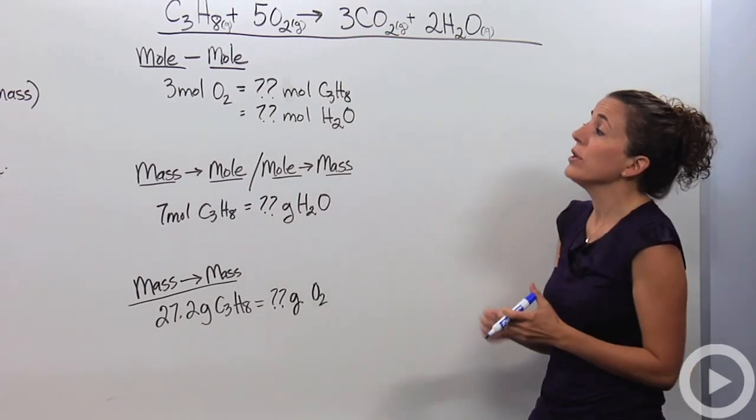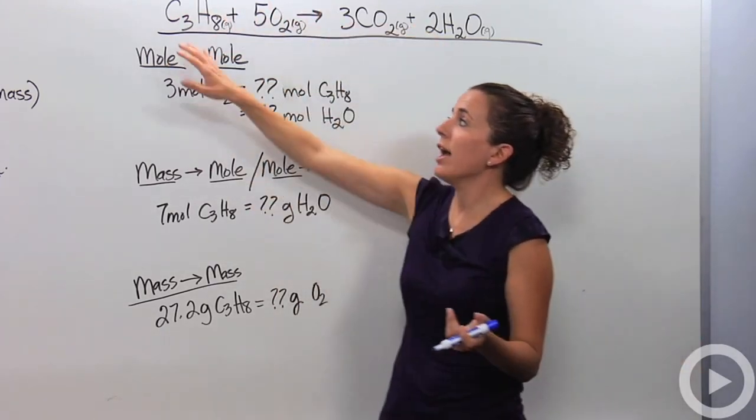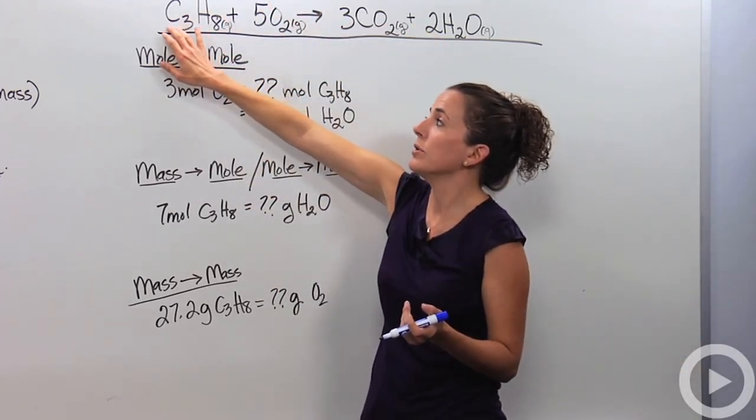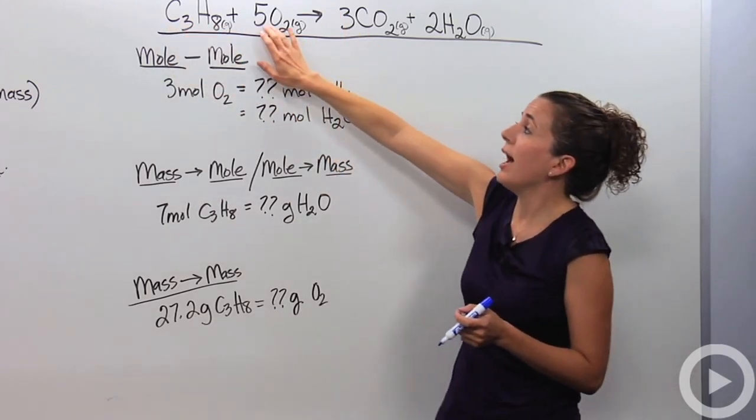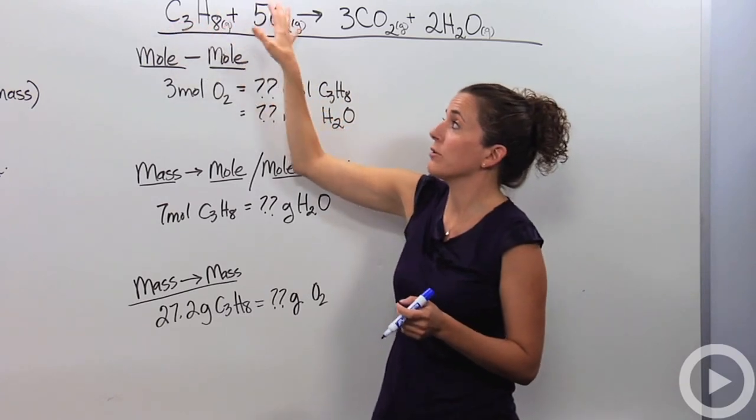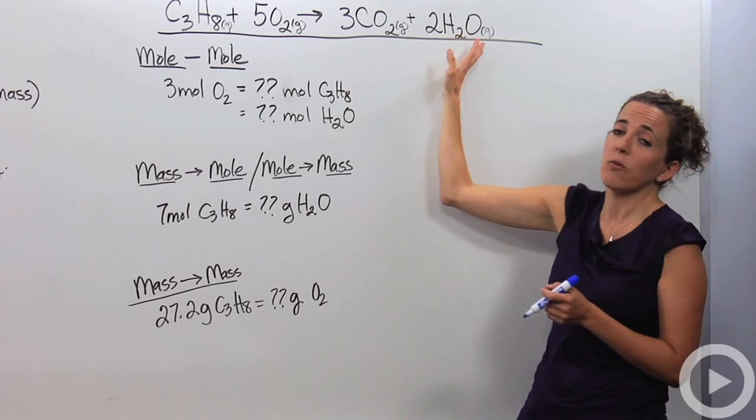Looking at the coefficients 1, 5, 3, and 2, we can say if I have 1 mole of butane, which is C3H8, I need 5 moles of oxygen gas to fully react with that. Then I'm going to produce 3 moles of carbon dioxide and 2 moles of water.